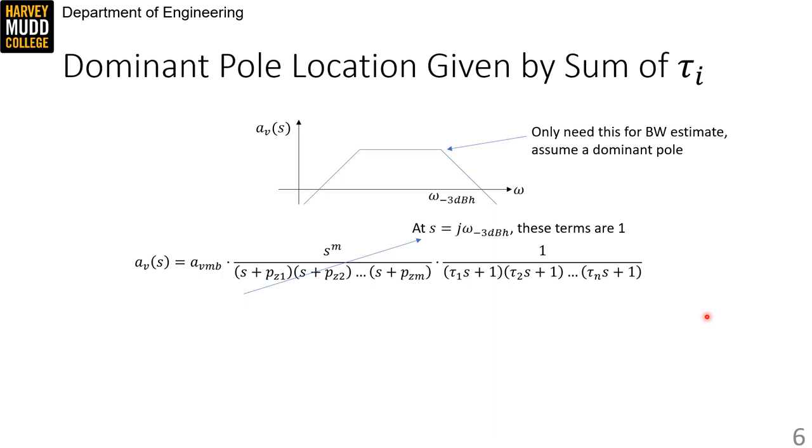The first simplification we're going to make is getting rid of the low frequency pole zero pairs because we're operating at a frequency well above any of the pzi. That means each pole zero pair in this is equal to one because s is greater than the associated pzi and so it just cancels with a term of s on the top.